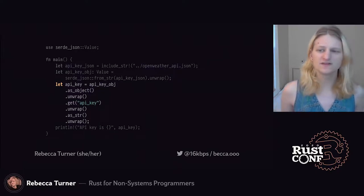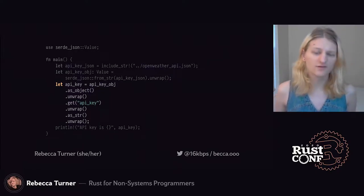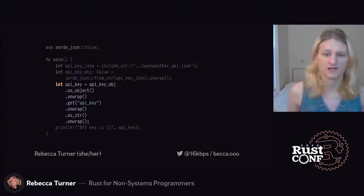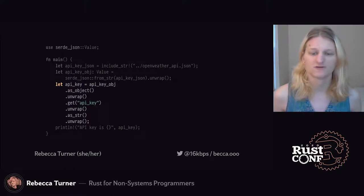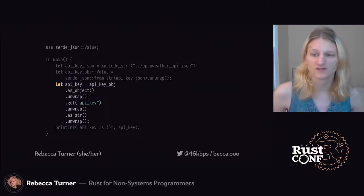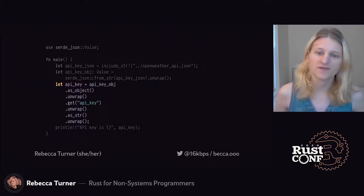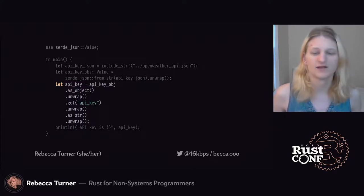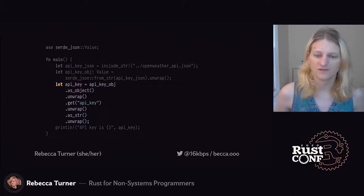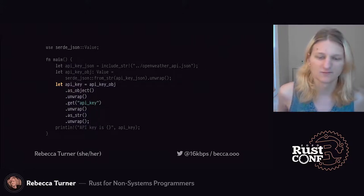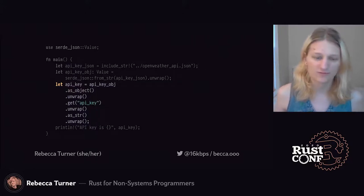Note that this isn't entirely unique to Rust — our Python program would also crash if the API key object wasn't a JSON object, or if it didn't have a key named `api_key`, or if the value of that key wasn't a string. But Rust makes us be explicit about all these assumptions. That's not necessarily a bad thing — it helps us figure out where errors could happen — but it is awfully verbose and painful to write like this. But we do have a better way.